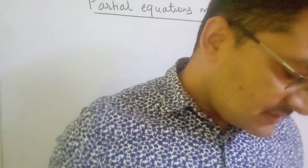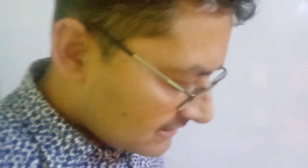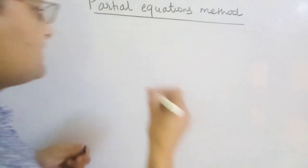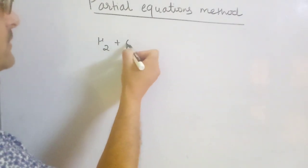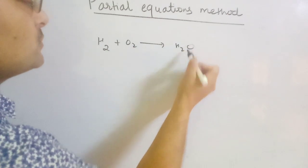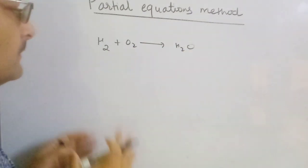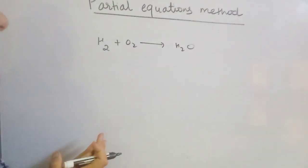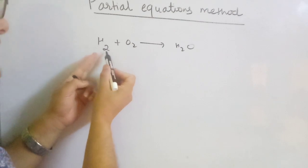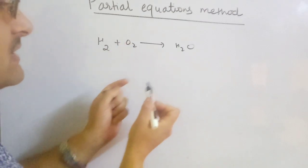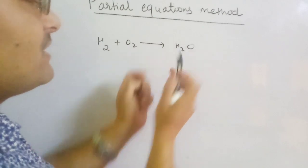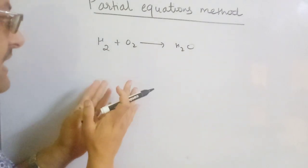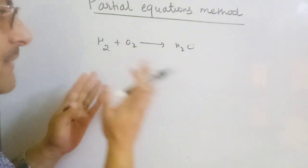As you know, a reaction must be balanced, otherwise it violates the law of conservation of mass. For example, if you have a simple reaction like H₂ plus O₂ gives water H₂O, if you don't balance it, then here are two hydrogen atoms and two oxygen atoms, but in the product there is only two hydrogen and one oxygen, so the atoms are not balanced.